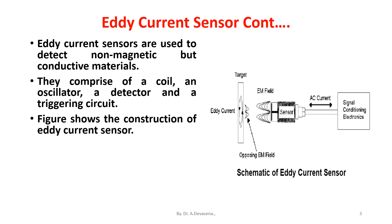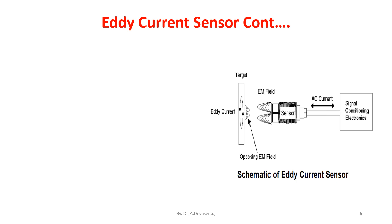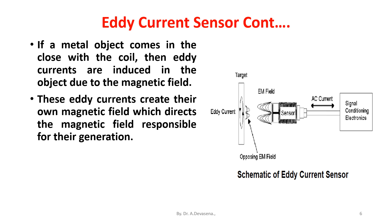When an alternating current is passed through this coil, an alternating magnetic field is generated. If a metal object comes in close proximity with the coil, then eddy currents are induced in the object due to the magnetic field. These eddy currents create their own magnetic field which distorts the magnetic field responsible for their generation. As a result, impedance of the coil changes and so the amplitude of alternating current.